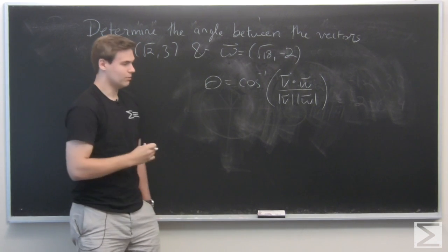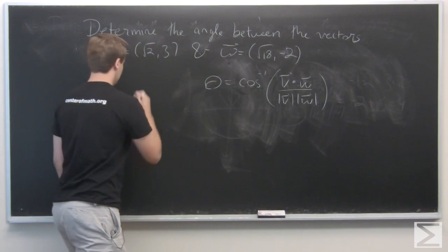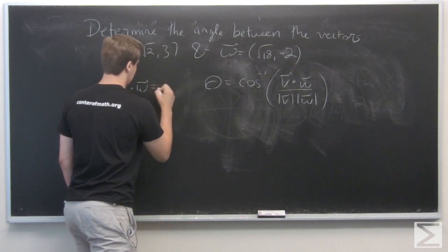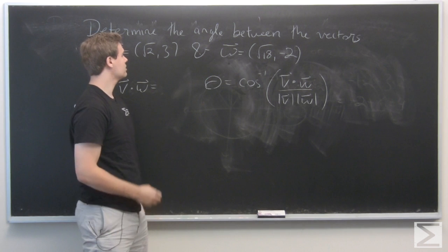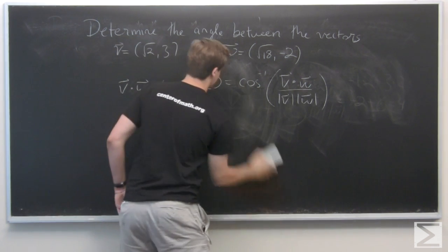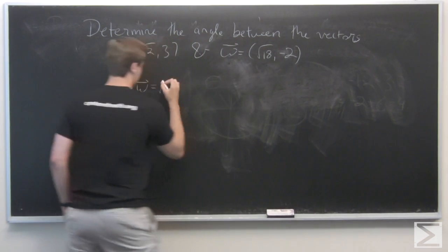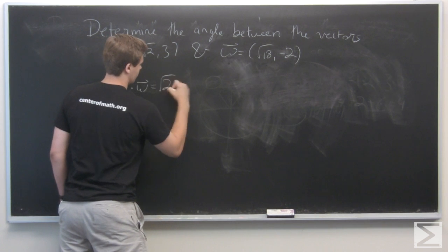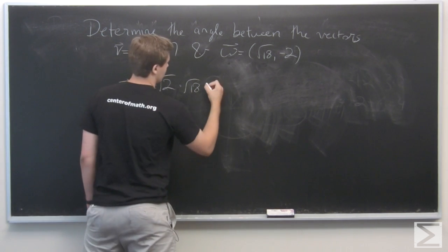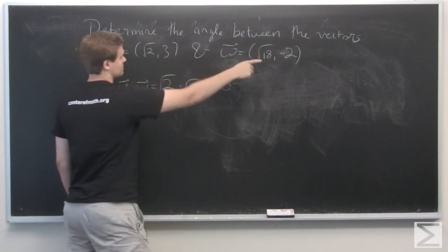So we just plug into this formula. We take the dot product of these two vectors. And we get minus 2. Let's get some room here. Minus 2 times—I'm sorry, square root of 2 times square root of 18, minus 6. So 3 times minus 2.